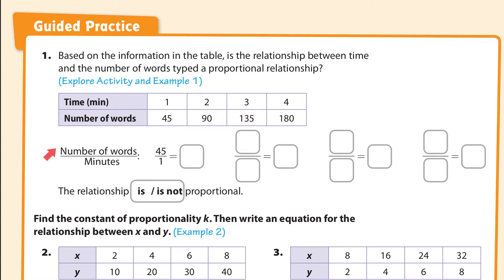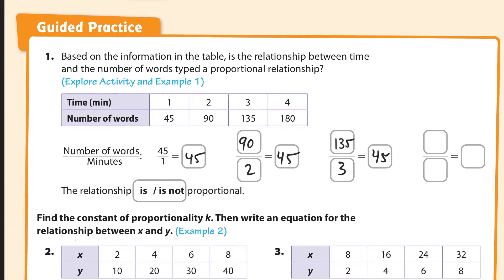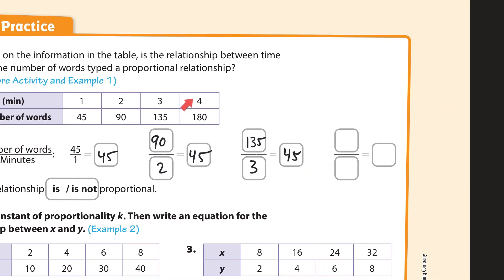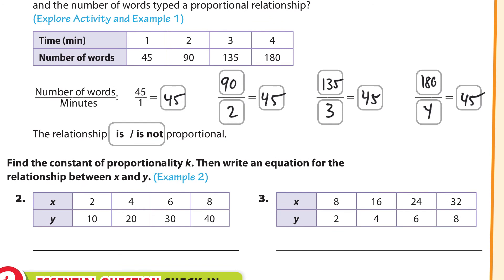Well, let's see. We're looking at the number of words divided by the number of minutes. We have 45 divided by 1, which equals 45. Then 90 divided by 2 is still 45. Then 135 divided by 3 — that's also 45. And 180 divided by 4 is also 45. So, is it a proportional relationship? The ratios are the same throughout, so yes, it is a proportional relationship.